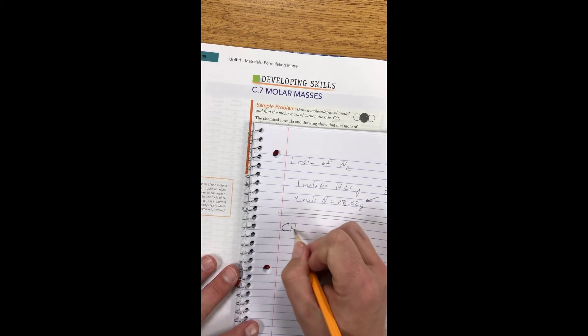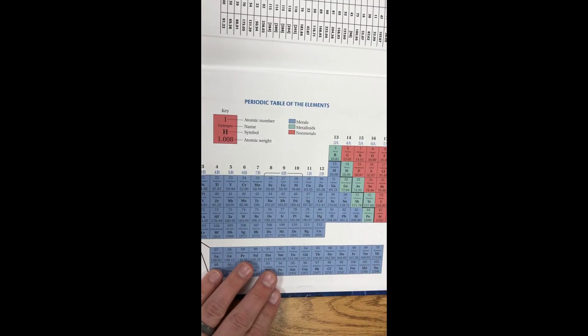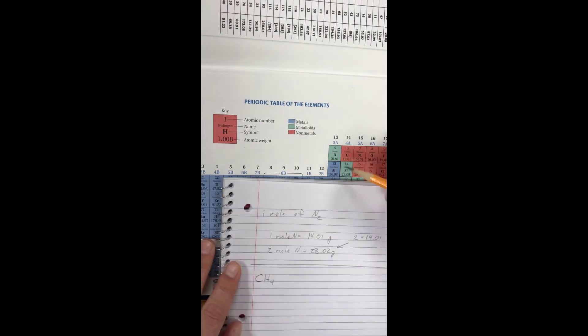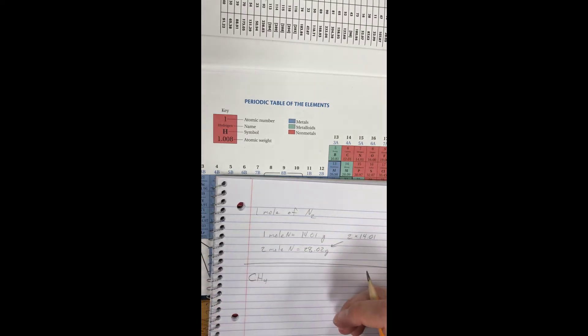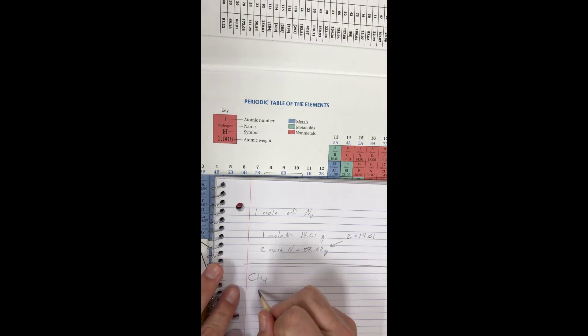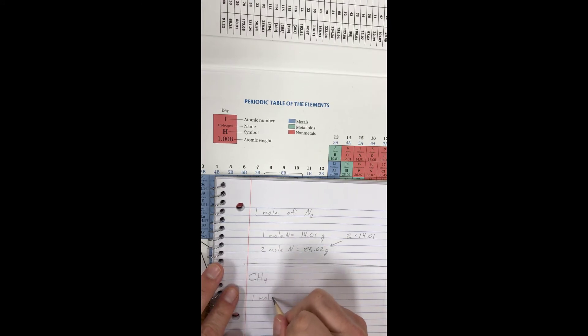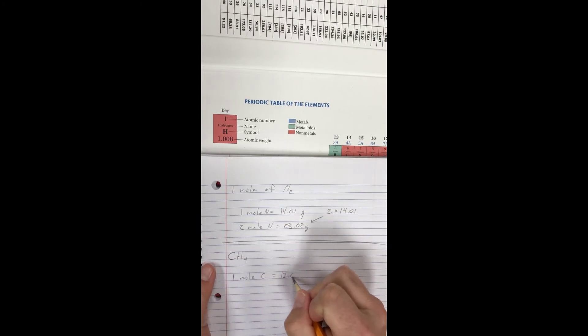So now we have CH4. I'm going to go back to my periodic table here, because I need to be able to reference that. And I see that carbon has an atomic weight of 12.01. Now I only have one carbon. So one mole of carbon equals 12.01.